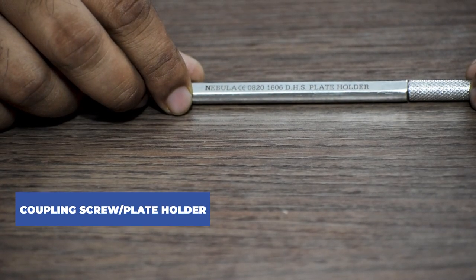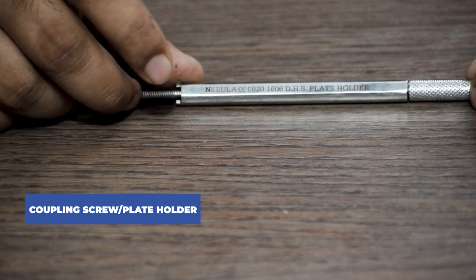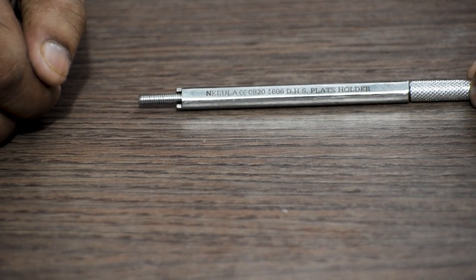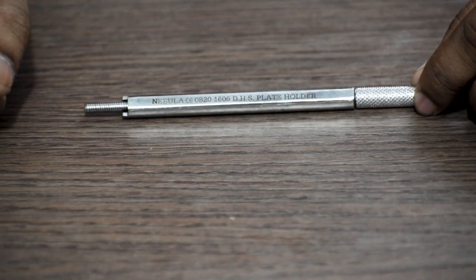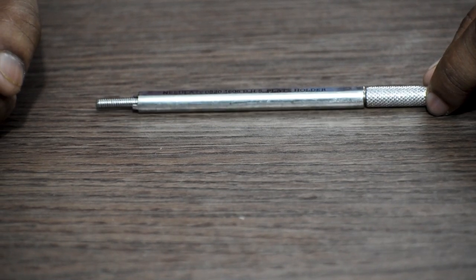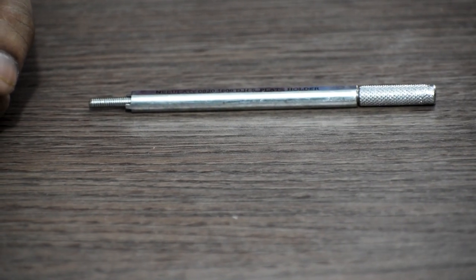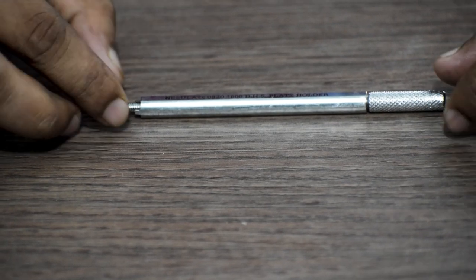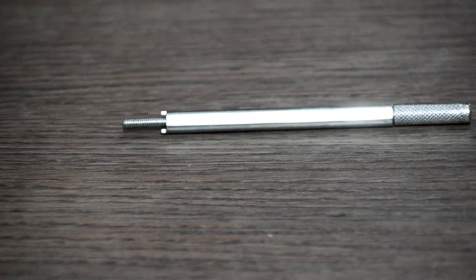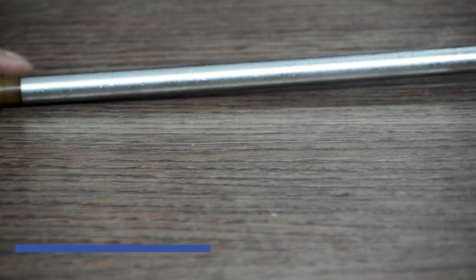This is called a coupling screw or a plate holder. Next, this is an impactor.